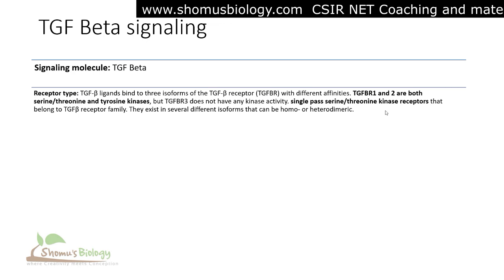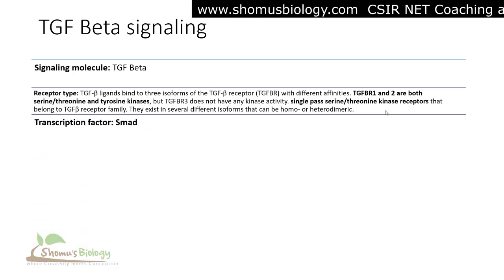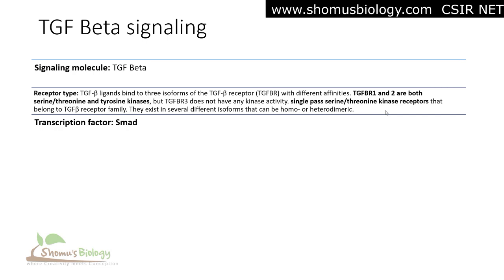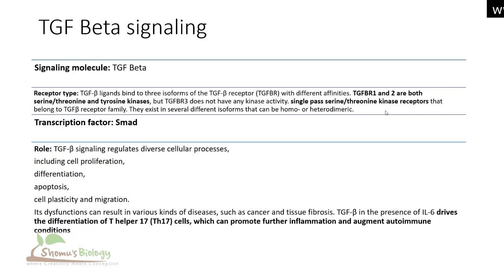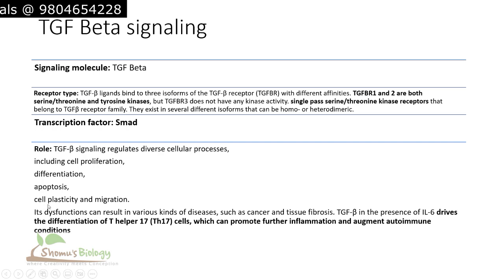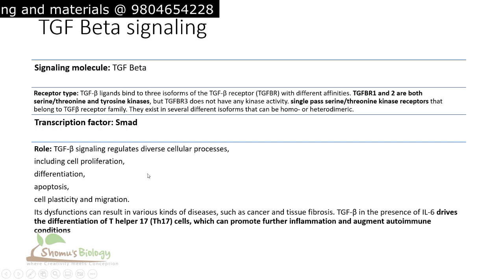The transcription factors used in TGF-beta signaling are known as SMAD proteins. The full form of SMAD is Suppressor of Mothers Against Decapentaplegic. The role of TGF-beta signaling is to regulate diverse cellular processes including cell proliferation, differentiation, apoptosis, cell plasticity, and migration, and its dysfunction can result in diseases such as tissue fibrosis.